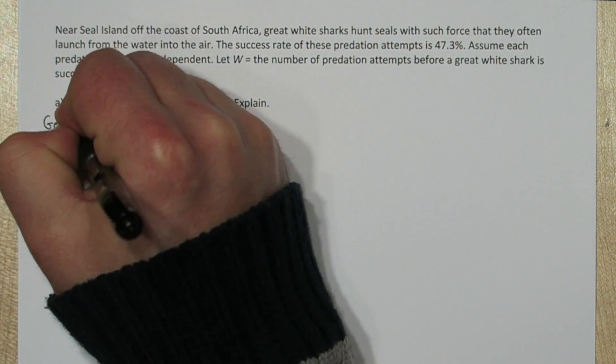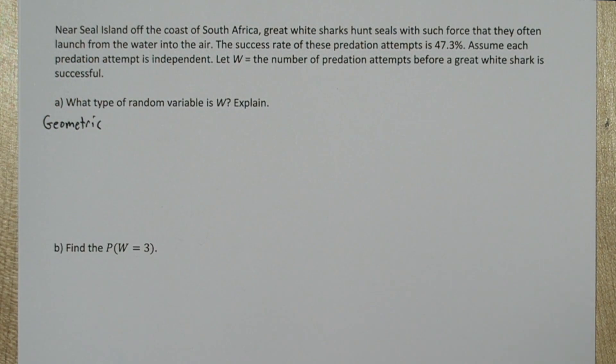W is a geometric random variable, and we can use the acronym BITS to help us check the conditions.